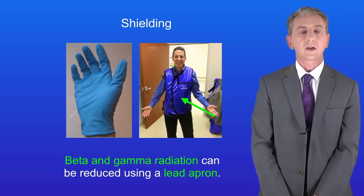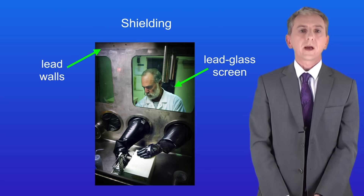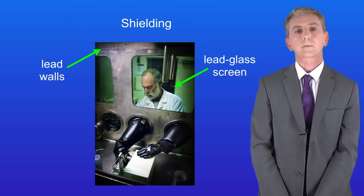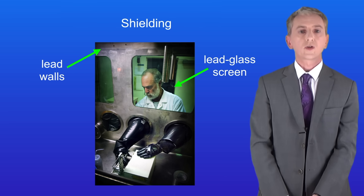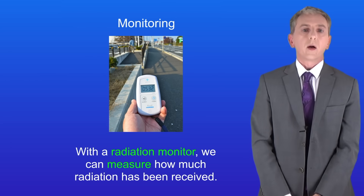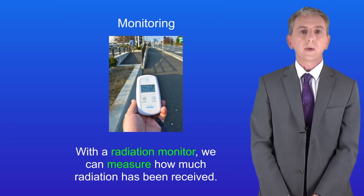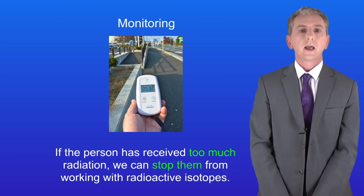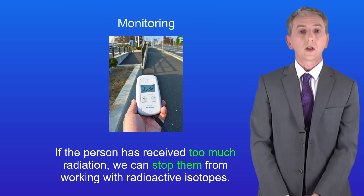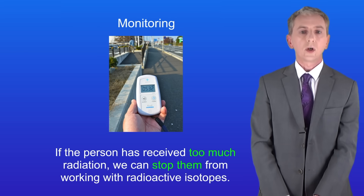However with high levels of radiation a lead apron may not be enough. This man's working with nuclear fuel — he's protected from the radiation by lead walls and by a screen made of glass containing lead. Another way we can reduce exposure to radiation is by using a radiation monitor such as this one. This does not stop radiation but it can mean that we can measure how much radiation has been received. If the person has received too much radiation we can stop them from working with radioactive isotopes. Remember that with irradiation you are not contaminated with the radioactive source, so you yourself do not become radioactive.